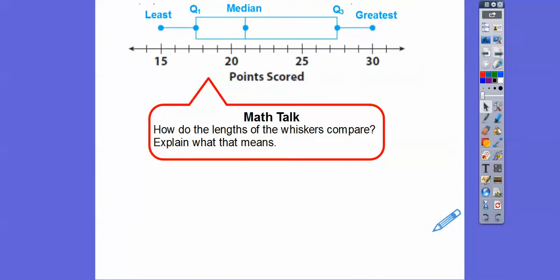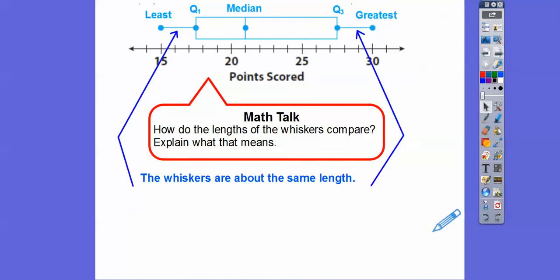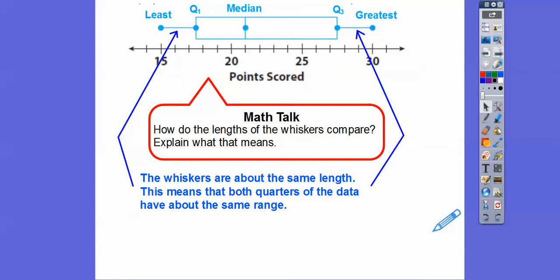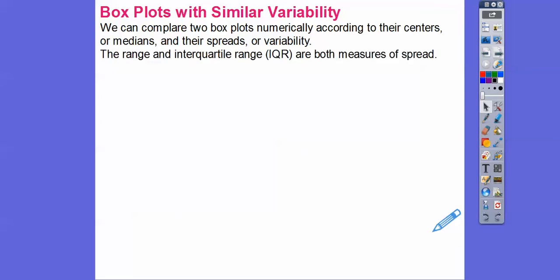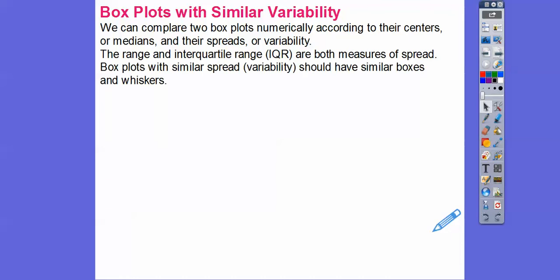How do the lengths of the whiskers compare? It goes from 15 up to 17.5 on the left, and from 27.5 up to 30 on the right — those are pretty much equal. The whiskers are about the same length, which means both quarters of the data have about the same range. We can compare two box plots numerically according to their centers (medians) and their spreads. The range and interquartile range (Q3 minus Q1) are both measures of spread and variability. Box plots with similar spreads should have similar boxes and whiskers.